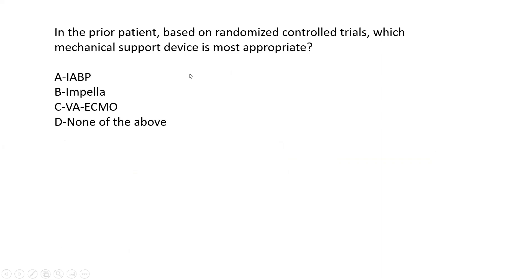A related question: based on randomized control trial data, which mechanical support device is most appropriate in this setting? The answer is none — D. There is actually randomized data showing no benefit for some of them. For balloon pump: CRISP-AMI included STEMI patients with heart failure and showed no benefit of placing a balloon pump. More importantly, the IABP-SHOCK 2 trial randomized MI patients with cardiogenic shock to balloon pump versus no balloon pump, and showed absolutely no mortality benefit of any sort.